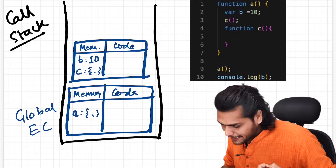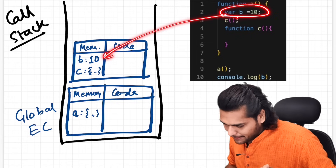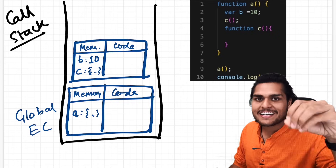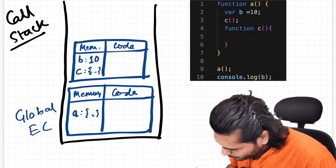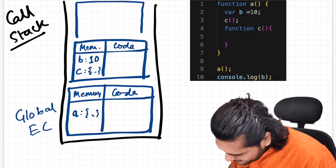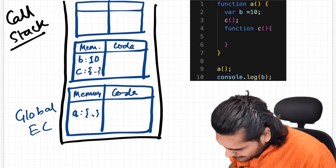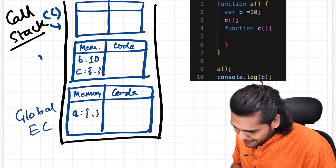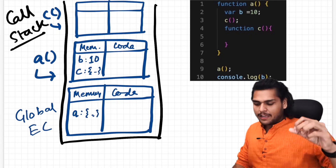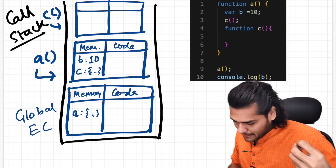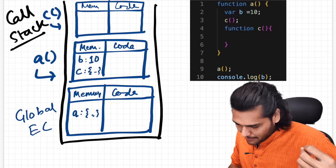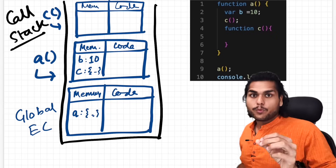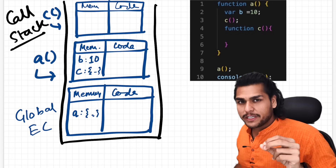Function `a` reserves memory for variable `b` and function `c`. Initially `b` is set to undefined and `c` to its function reference. Once execution begins, `b` becomes 10. Then we reach the invocation of `c`, which creates another execution context pushed onto the call stack — this is `c`'s execution context. There's nothing to set up in `c`'s memory here.